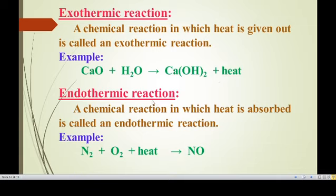An endothermic reaction is one in which heat is absorbed. For example, nitrogen reacts with oxygen to produce nitric oxide — heat is absorbed in this reaction. Plus heat is written on the reactant side because the reactants absorb heat to produce the product. If we touch the test tube, we feel coldness because heat is absorbed. In summary: if heat is absorbed, the reaction is endothermic; if heat is liberated or given out, the reaction is exothermic.